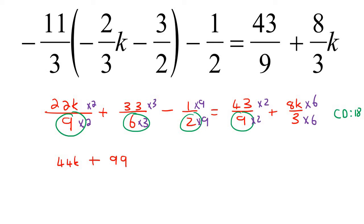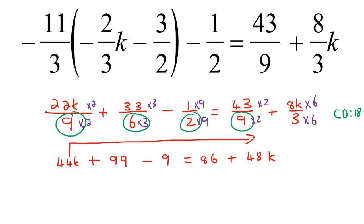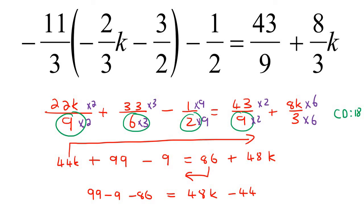Then 33 times 3 is 99, 1 times 9 is 9, 43 times 2 is 86, and then 8 times 6 is 48k. Now we can just move all the variables to one side and all the numbers to the other. So on the left we're going to have 99 minus 9 minus 86, because we're bringing this one over. On the right-hand side we've got 48k minus 44k. So 99 minus 9 is 90, minus 86 gives us 4, and on the right 48 minus 44 is just 4.